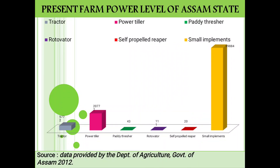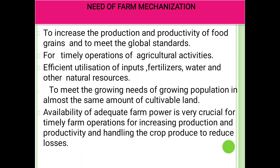Present farm power level of Assam state: this graph shows 5 to 6 terms — tractor, rotavator, power tiller, self-propelled reaper, paddy thresher, and small implements — showing how these have increased or decreased year by year in terms of the need for farm mechanization.